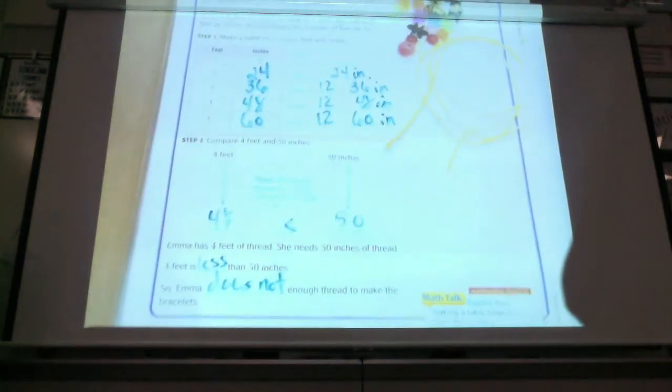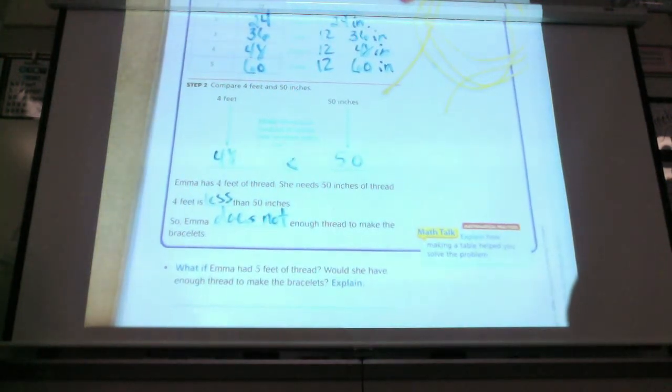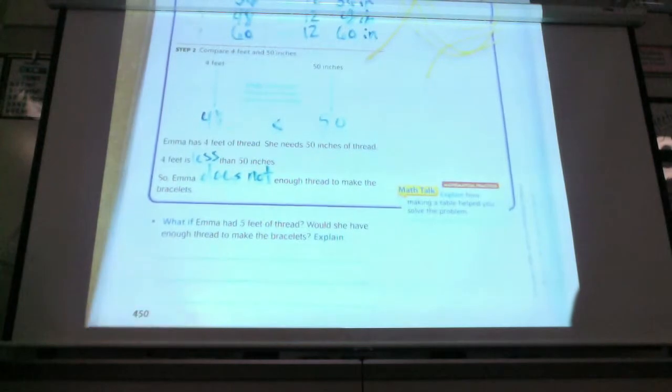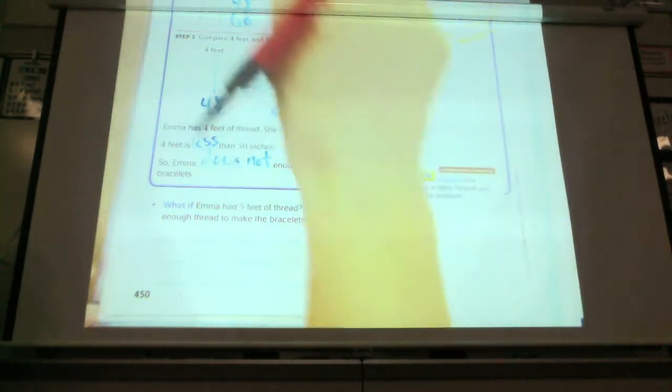I see that. What if Emma has five feet of thread, would she have enough thread to make the bracelets? What did you guys decide? Would she? Yes. How much would she have? Sixty. And how much does she need? Fifty. So does she have extra? Yes. How much extra does she have? Ten.